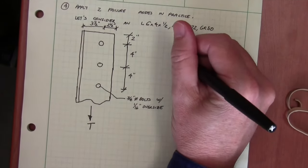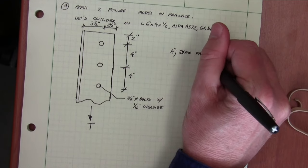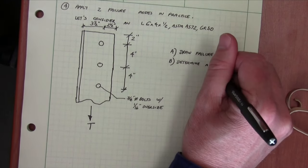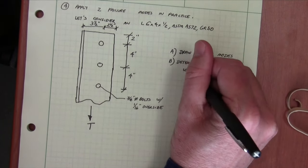These are three quarter inch bolts with a one sixteenth inch oversize on the holes. And we want to do two things. First, we want to draw the failure modes. And second, we want to determine the allowable loads in tension for each of the failure modes.